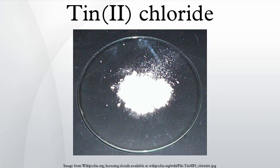If alkali is added to a solution of SnCl2, a white precipitate of hydrated tin oxide forms initially. This then dissolves in excess base to form a stannite salt such as sodium stannite: SnCl2 + 2 NaOH → Sn(OH)2 + 2 NaCl, then Sn(OH)2 + NaOH → Na[Sn(OH)3]. SnCl2 can be used to make a variety of interesting compounds in nonaqueous solvents.